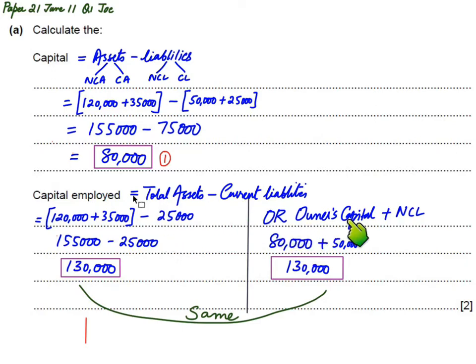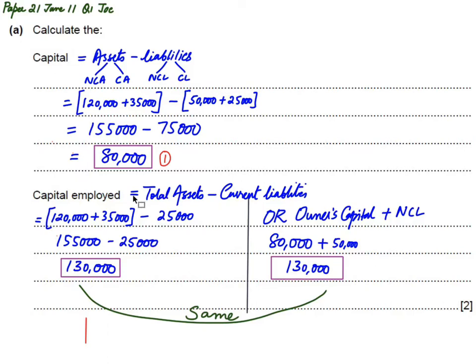Both methods give the same result. Whichever formula the examination question permits, you can use accordingly. Capital employed will always be greater than or equal to owners capital — in this case owners capital is 80,000 and capital employed is 130,000 — because capital employed also includes outsiders' capital (loans). There is no scenario where capital employed is less than owners capital.